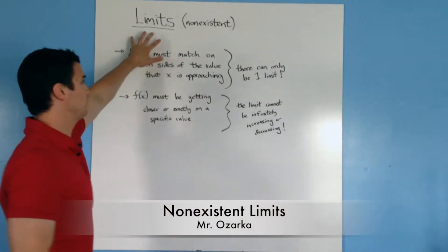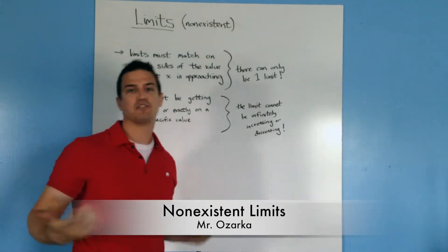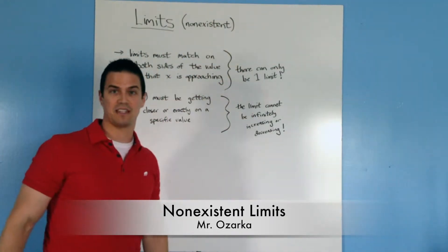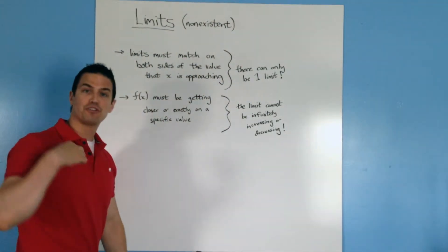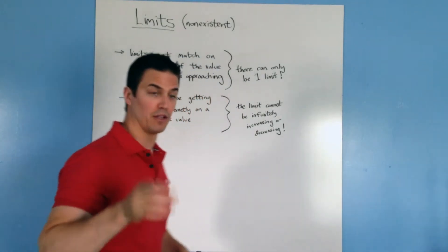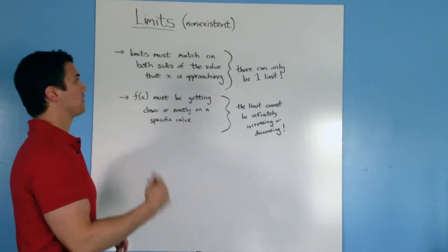So now we're going to be talking about special cases of limits in which they just fail to exist, or they're non-existent as it says up here. There's two general cases where this happens, and you have to be on the lookout for this so you don't mess up calculating a limit.